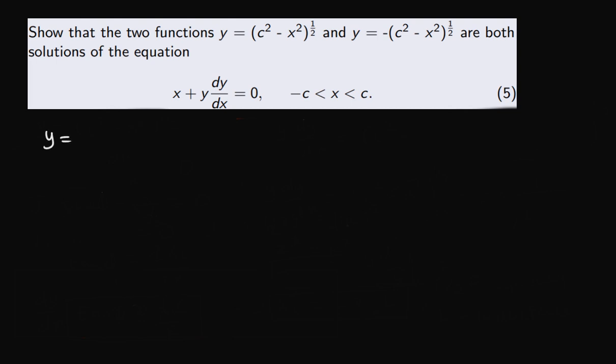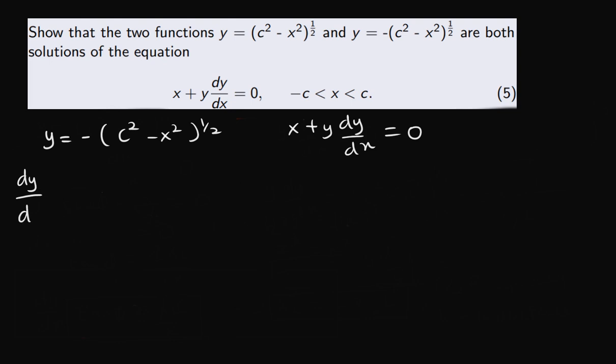For the second function, y equals minus c squared minus x squared to the power of half. Let's prove that this is also a solution to the differential equation x plus y dy over dx equals zero. Since the differential equation contains the first derivative of y, we differentiate this function.